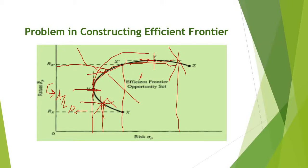Beyond this global minimum variance point there is no feasible solution, because the entire region beyond it belongs to the unattainable set. Within the attainable set there are two subsets: the inefficient set and the efficient set. The global minimum variance portfolio is the point where, for a given level of return, you get the minimum risk for this particular combination of stocks or asset returns.